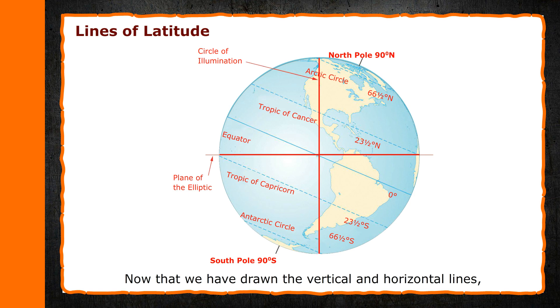Now that we have drawn the vertical and horizontal lines, known as longitudes and latitudes, respectively, we have a network of intersecting lines. The points where these lines intersect each other provide us a location coordinate which help us in locating a place on the globe.